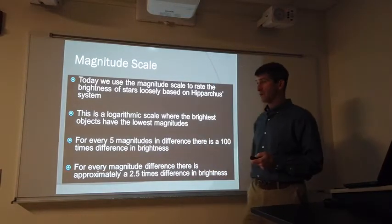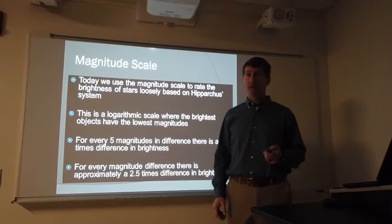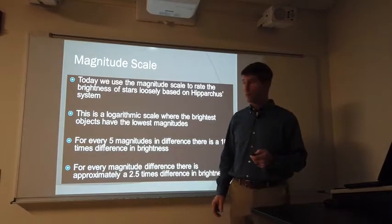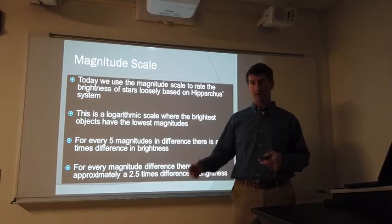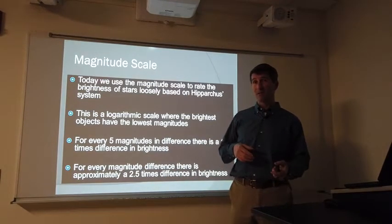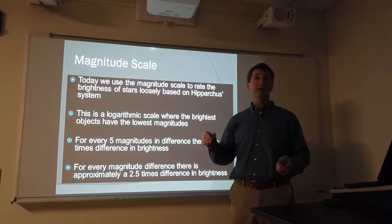For every five magnitudes difference, that corresponds to a hundred times brighter. So, magnitudes are sort of a backward scale. The lower number means brighter.